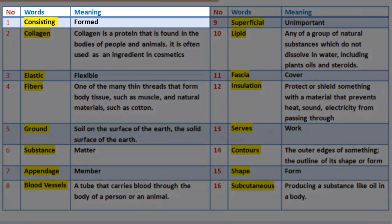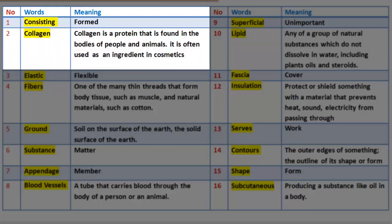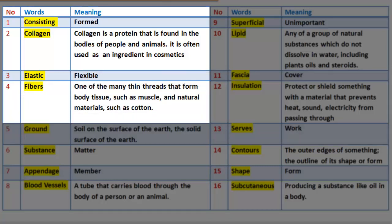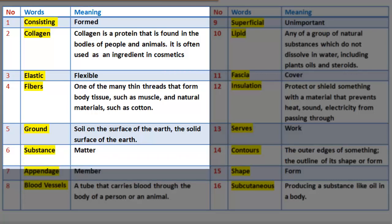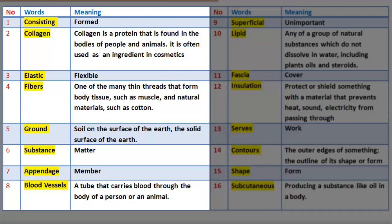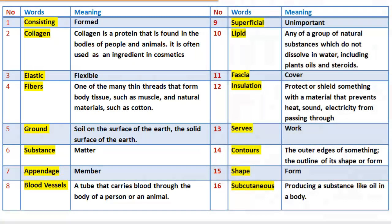Vocabulary 3. Number 1: Consisting — formed. Number 2: Collagen — a protein that is found in the bodies of people and animals, often used as an ingredient in cosmetics. Number 3: Elastic — flexible. Number 4: Fibers — one of the many thin threads that form body tissue such as muscle and natural materials such as cotton. Number 5: Ground — soil on the surface of the earth. Number 6: Substance — matter. Number 7: Appendage — member. Number 8: Blood vessels — a tube that carries blood through the body of a person or an animal.